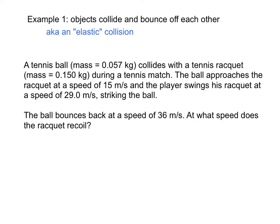So in this example, if you imagine a player hitting a tennis ball, a tennis ball of a certain mass collides with a tennis racket during a game. The ball approaches the racket at a speed of 15 meters per second, and the player swings his racket at a speed of 29 striking the ball. If you know how fast the ball bounces off the racket, at what speed does the racket recoil?